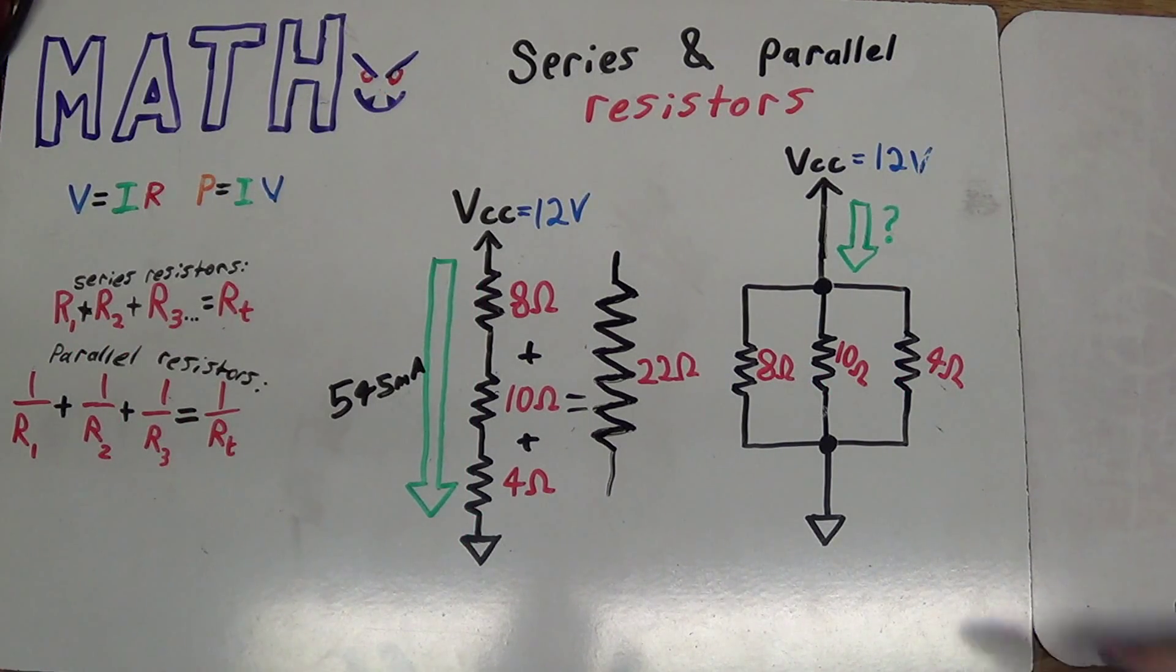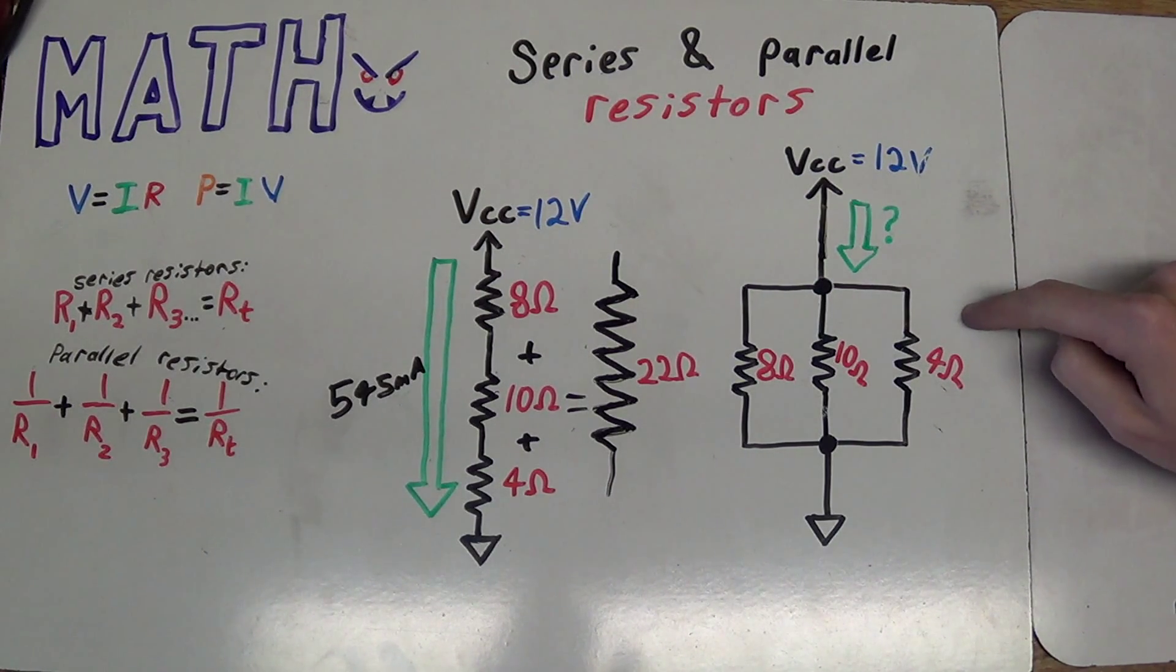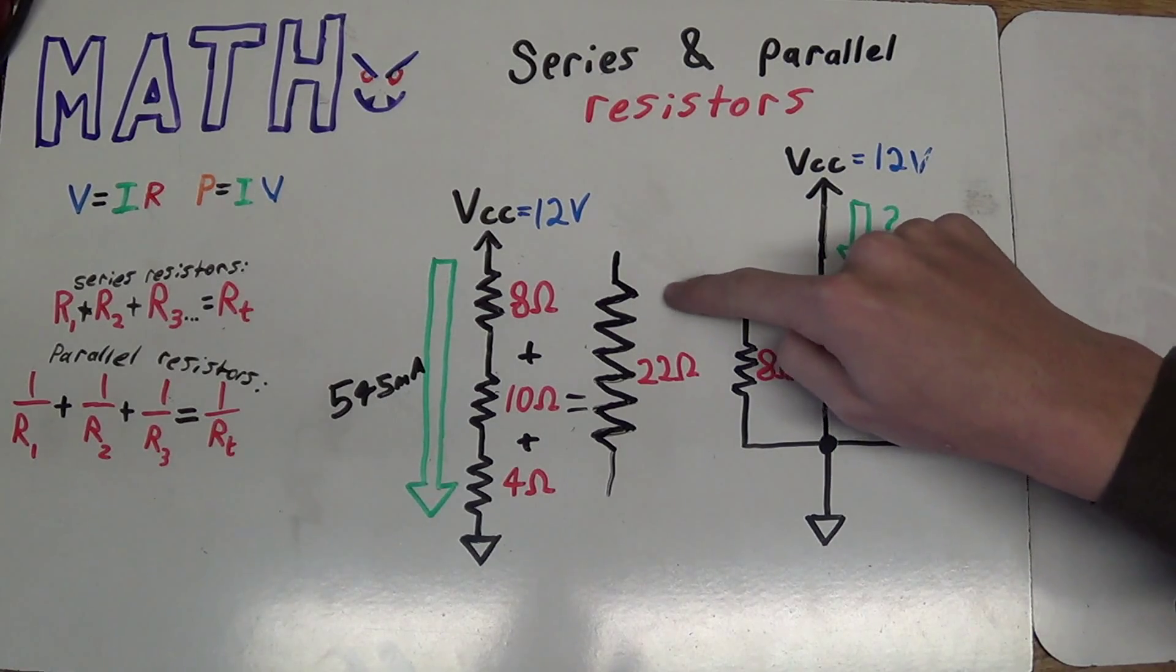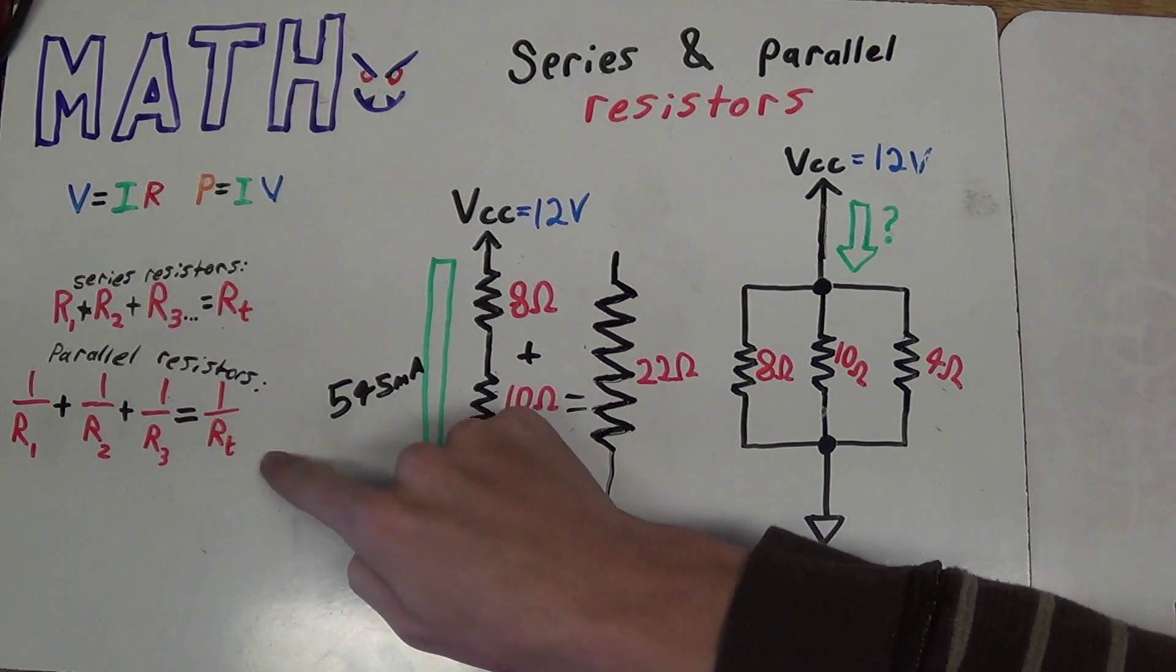Alright, now let's do the same thing for the parallel resistance formulas. I want to figure out what the total current is going to be. But, I have so many resistors here, and I just want to simplify them down to one giant resistor, to make it easy to use Ohm's law. So let's go ahead and use the parallel resistor formula, to simplify these resistors down to just one large one.